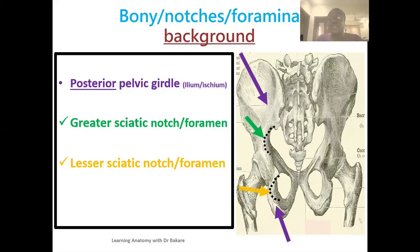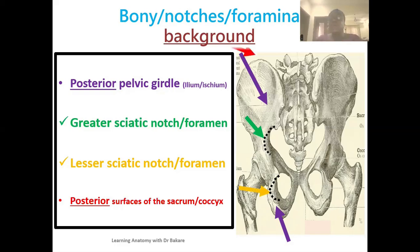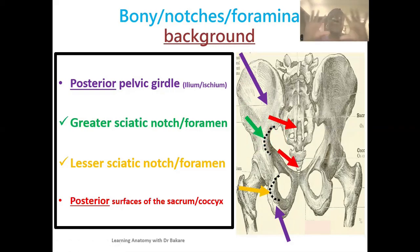The lesser sciatic notch is highlighted here in yellow. The last structures forming the background of the posterior gluteal region are the posterior surfaces of the sacrum and also the coccyx — the sacrum highlighted at the upper edge and the coccyx highlighted in red at the inferior region. These structures come together to create a background onto which muscles, ligaments, and neurovascular structures are laid upon.